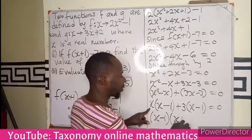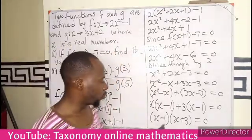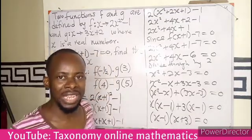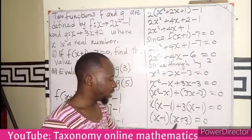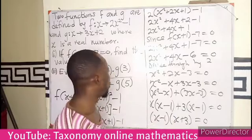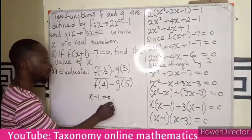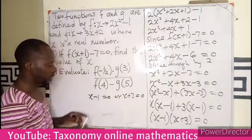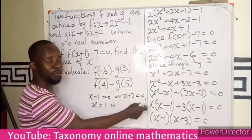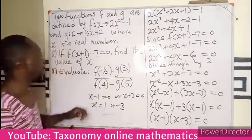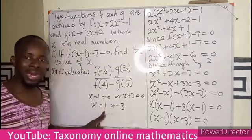We are left with x minus 1 times x plus 3 equals 0. We know by the zero property of real numbers, if two brackets multiplied give you 0, either one equals 0. So x minus 1 equals 0 or x plus 3 equals 0. If you add 1 to both sides, x becomes 1. Or if you subtract 3 from both sides, x becomes negative 3. The value of x in this equation is either 1 or negative 3.